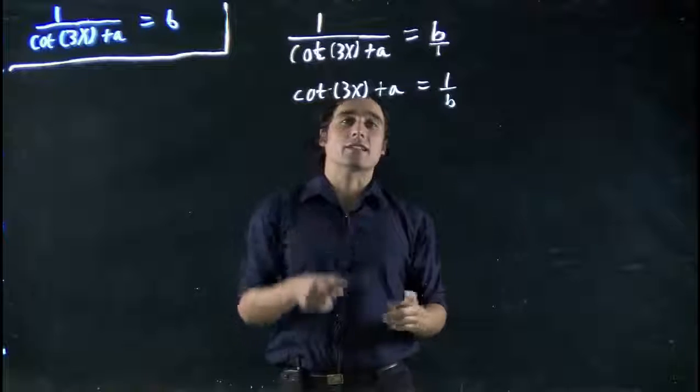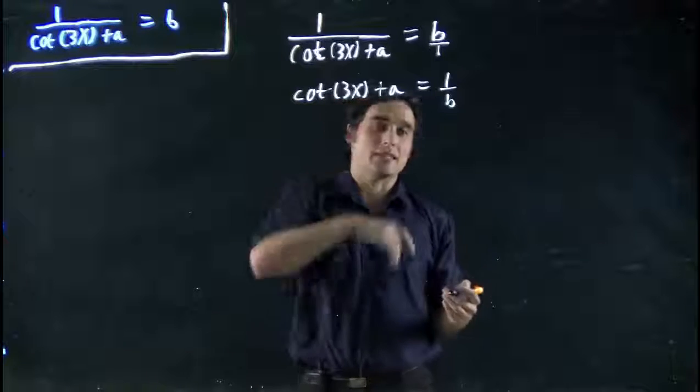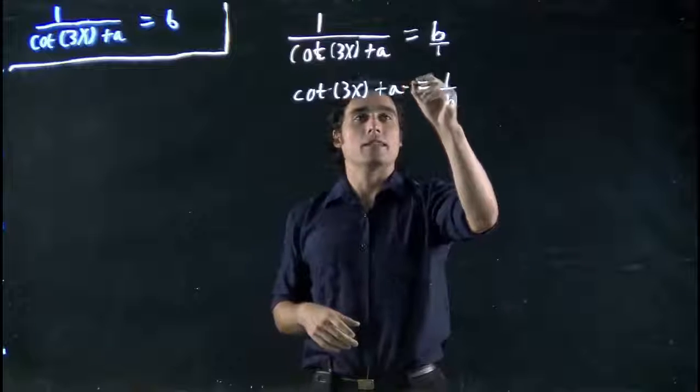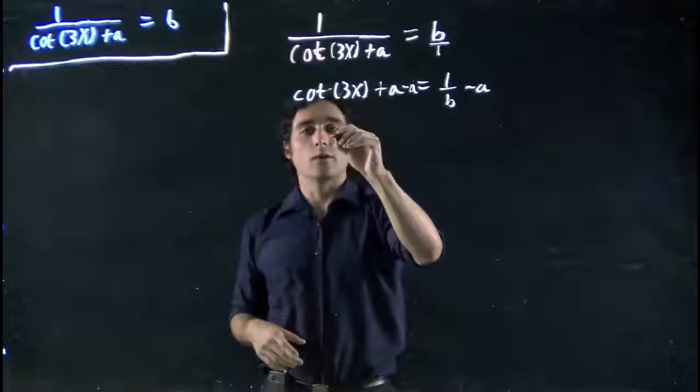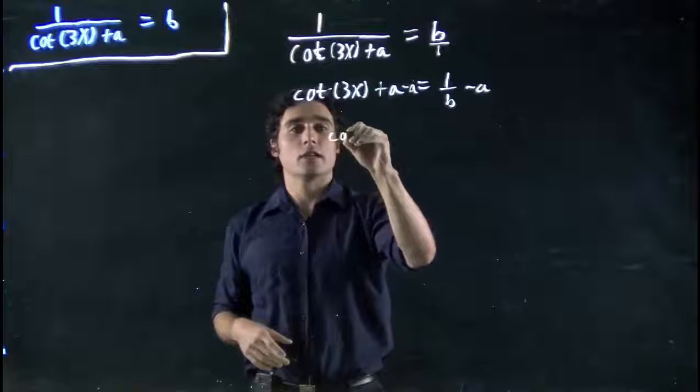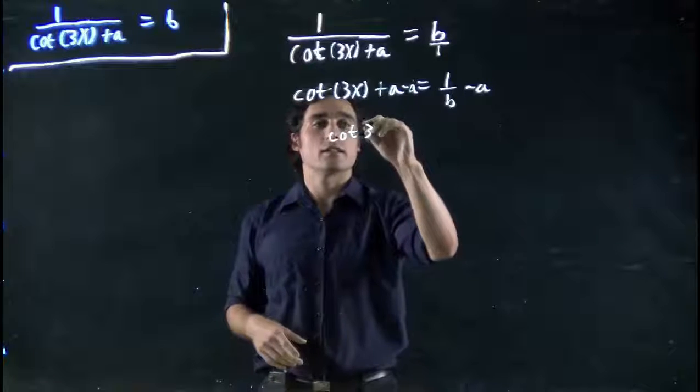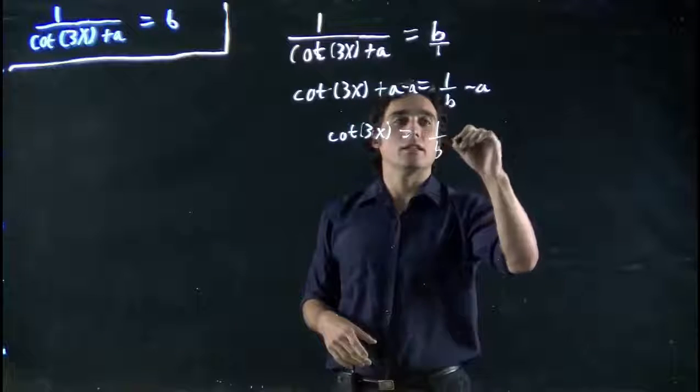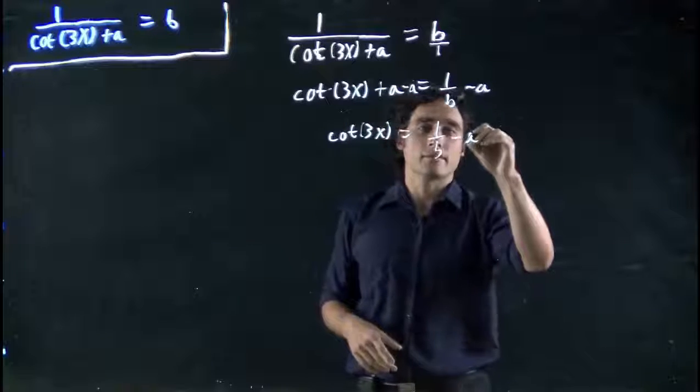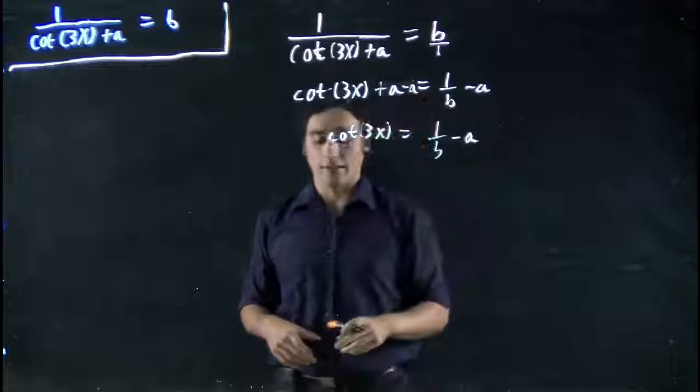We want to get 3x on its own. Right now we've got to eliminate the cotangent of 3x plus a, so minus a from both sides. And what we have is cotangent of 3x equals 1 over b minus a.